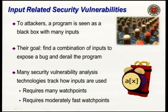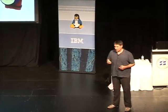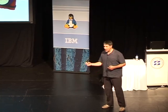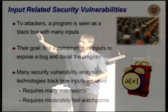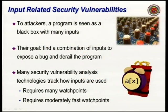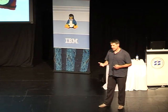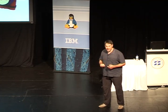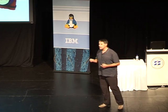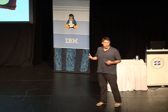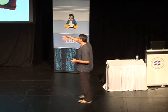So where do watchpoints come into this? The vast majority of security vulnerability analyses track how information comes from the outside world and flows through the computation of your program. If you look at how programs are attacked, an attacker treats your program as a black box with knobs — inputs like network data, file information, and options. The goal is to find a combination of inputs that leads to a bug and allows them to derail your program, inject code, etc. Watchpoints are the mechanism we use to track what information inside the program is externally derived and potentially dangerous versus what was put there by the programmer, which we trust.